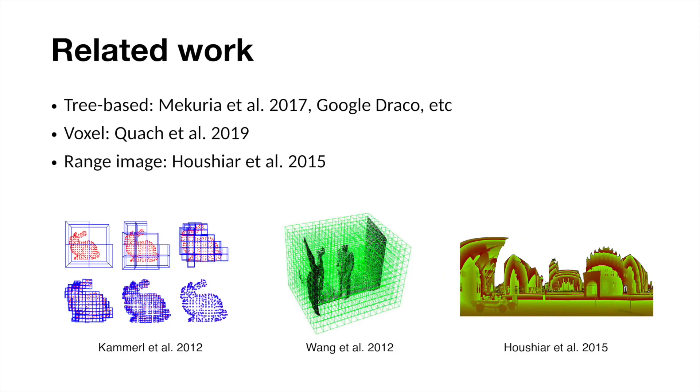Prior work in point cloud compression includes tree-based methods, voxel convolution methods, and methods which compress image projections. Tree-based methods adapt best to sparsity while keeping 3D structure in mind, so we propose to enhance tree-based point cloud compression using a deep entropy model.